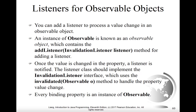Observable is a class and objects of that class are known as observable objects. These contain the addListener method, which implements the InvalidationListener interface, and this method is used for adding a listener. Whenever the property value of the associated property changes, the listener is notified. The listener class implements the InvalidationListener interface and uses the invalidated method with an object of the Observable class to handle that property value change.